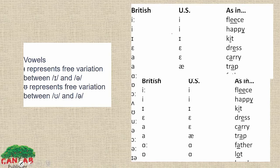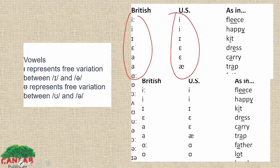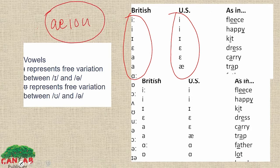Let me show you: these are the phonetic symbols for US and British English. There is a slight difference between US and British English. These are the vowel sounds. I know you are familiar with the vowel sounds: A, E, I, O, U. Here, I represents free variation between I and E, and U represents free variation between U and E.